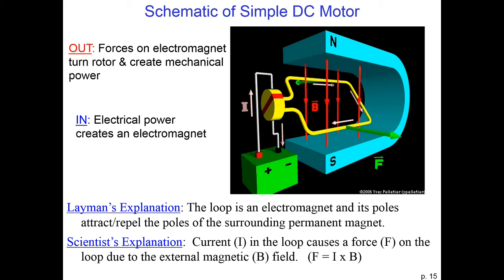Now we look at the bottom part of the loop. There, the current is going to the left, the magnetic field is pointing down, so the force is pointing out of the page. The top of the loop is going into the page, and the bottom of the loop is coming out of the page. That means that the loop wants to turn.